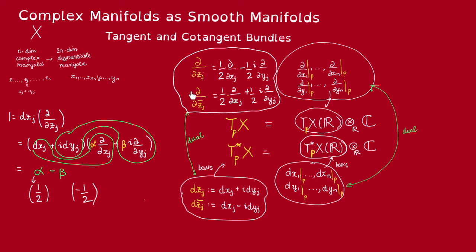Thus we get the following basis of the complex tangent space that is dual to this basis of the complex cotangent space.